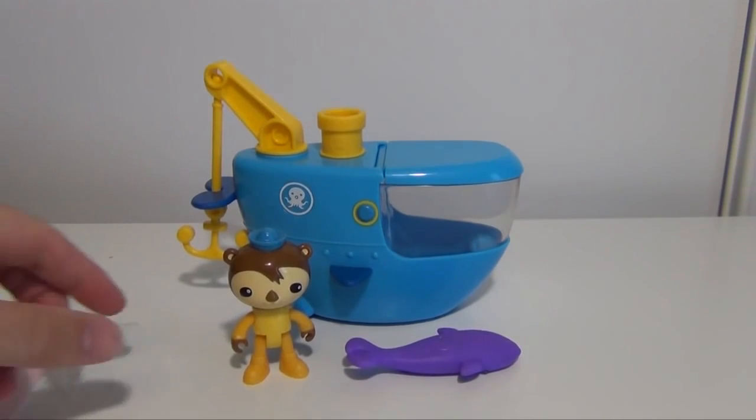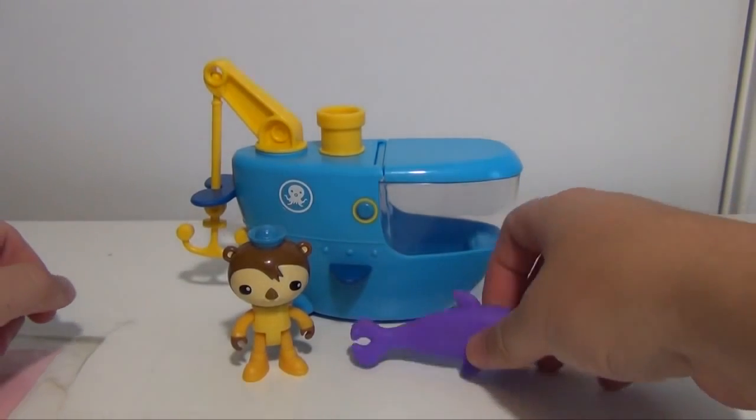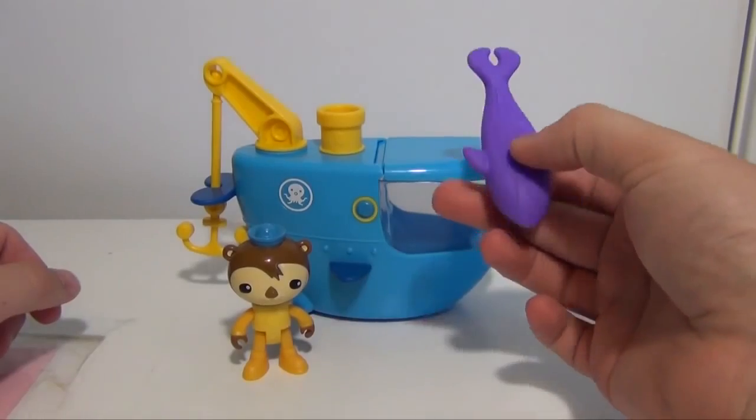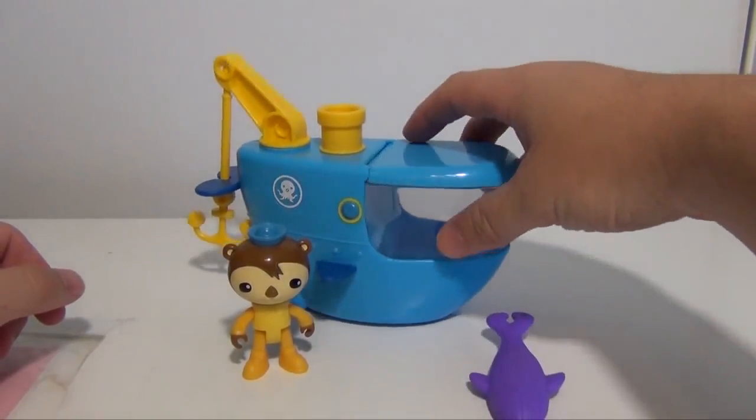Now it comes with Shellington, which can fit in the Gupsea. It comes with a whale that changes colors, and we'll see that in a second, and it comes with the Gupsea.